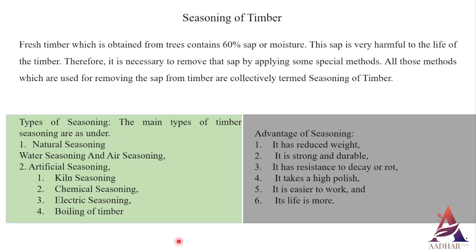Seasoning of timber. Fresh timber which is obtained from trees contains 60% sap or moisture. This sap is very harmful to the life of the timber. Therefore, it is necessary to remove that sap by applying some special methods. All those methods which are used for removing the sap from timber are collectively termed seasoning of timber.